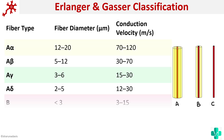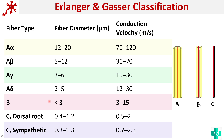The basic diameters and conduction velocities are as follows: A-alpha, the thickest, has a diameter of 12 to 20 µm. A-beta is around 5 to 12 µm. A-gamma is 3 to 6 µm. A-delta is 2 to 5 µm. There is a decreasing trend in fiber diameter, with C fibers having the smallest diameter. Conduction velocity follows the same pattern — maximum for A-alpha, decreasing progressively. C fibers have the lowest conduction velocity because they are unmyelinated; myelination is required for higher conduction velocity.